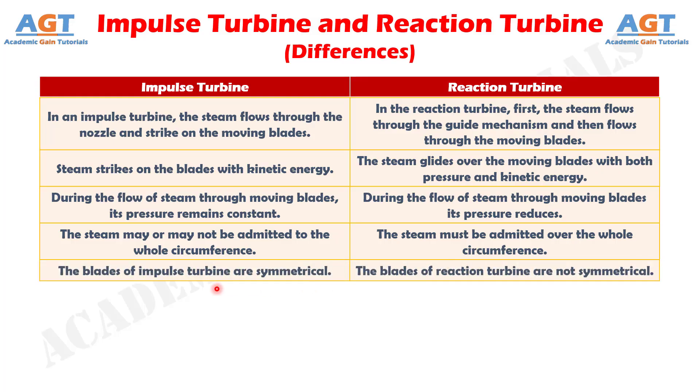Number 5: The blades of the impulse turbine are symmetrical. Whereas, in reaction turbine, the blades are not symmetrical.